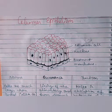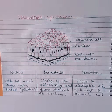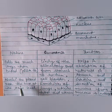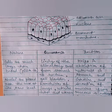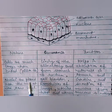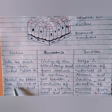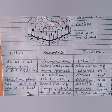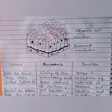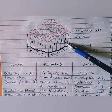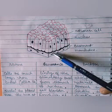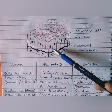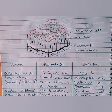Next is columnar epithelium. In columnar epithelium, the cells are much longer than they are broad, so they look like a pillar. The nucleus is present near the base, at the same level across cells. As you can see in the diagram, the cells are pillar-like — longer than their width — and the nucleus is present at the base at the same level.